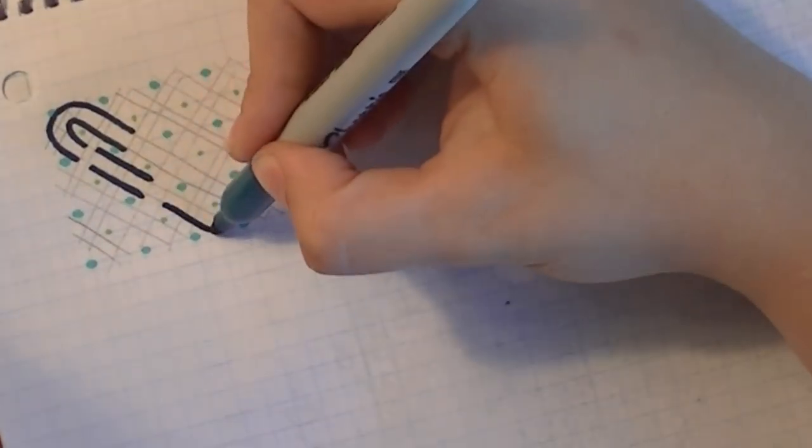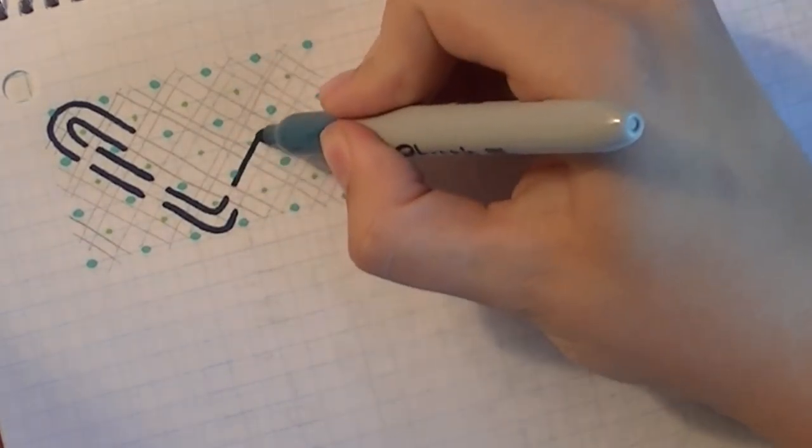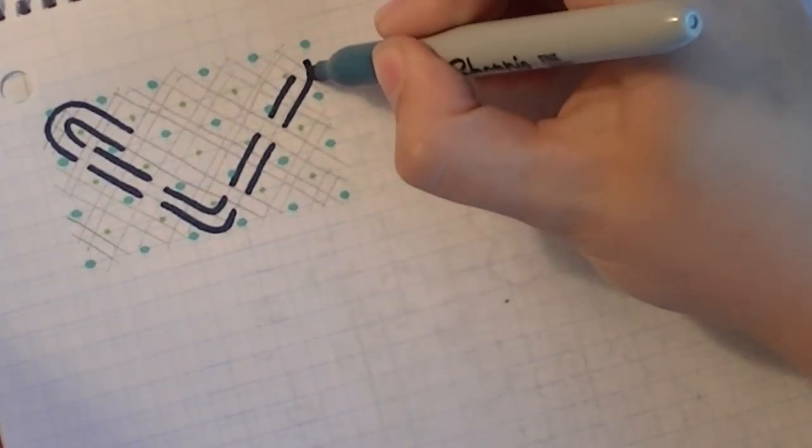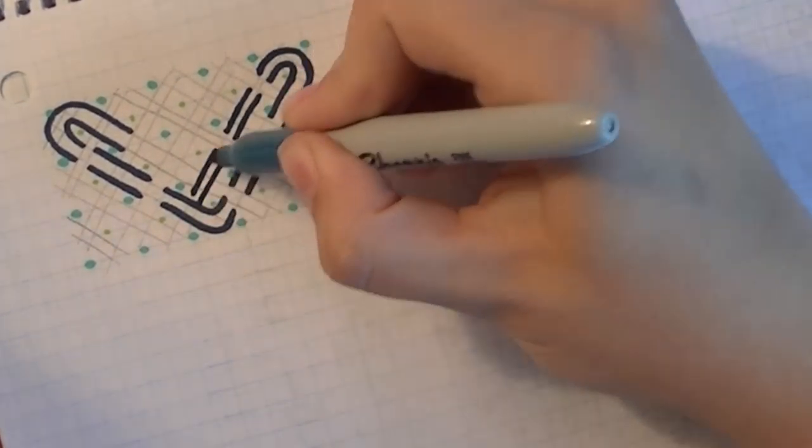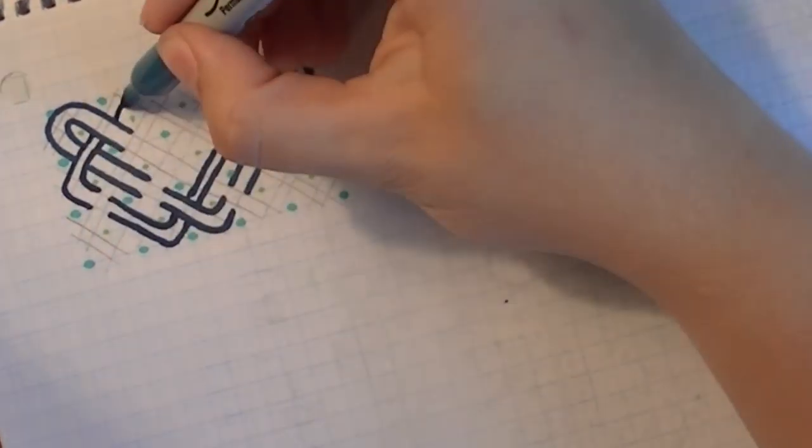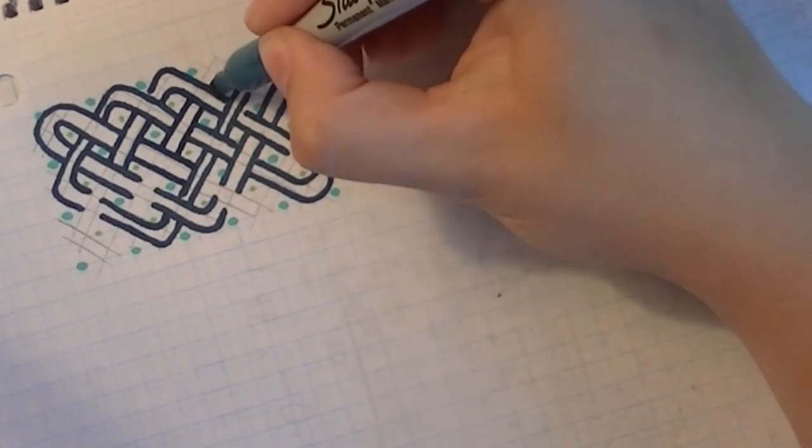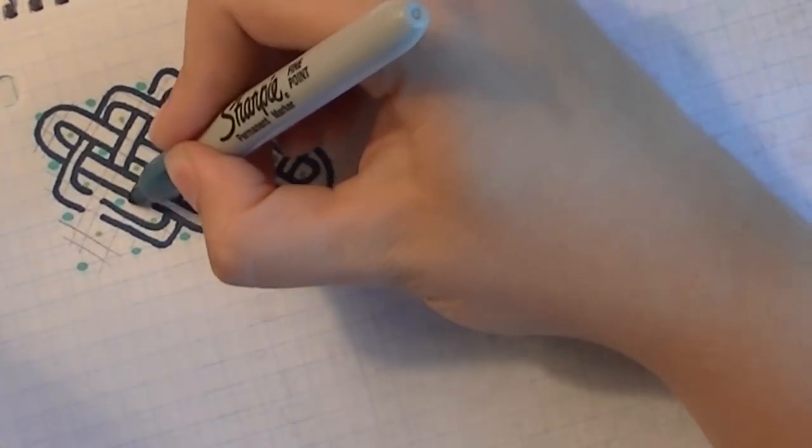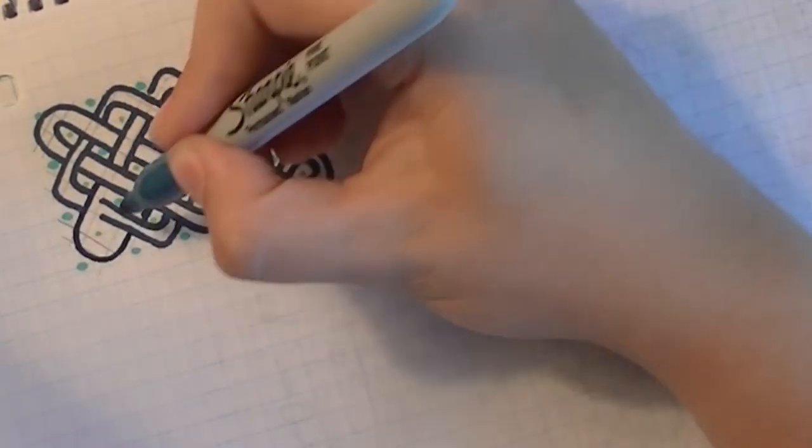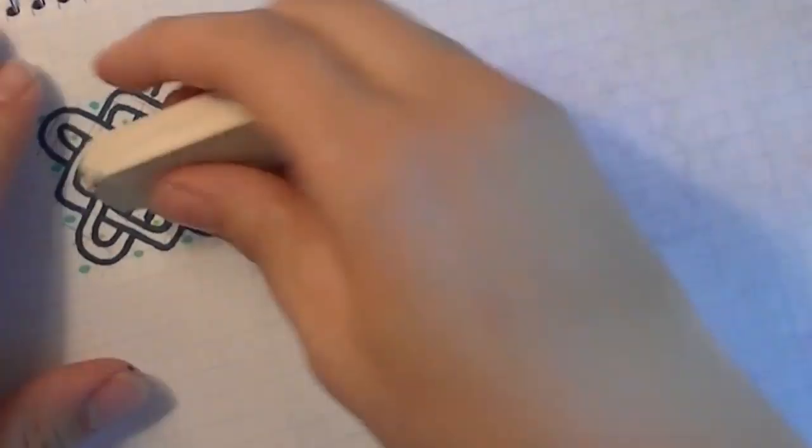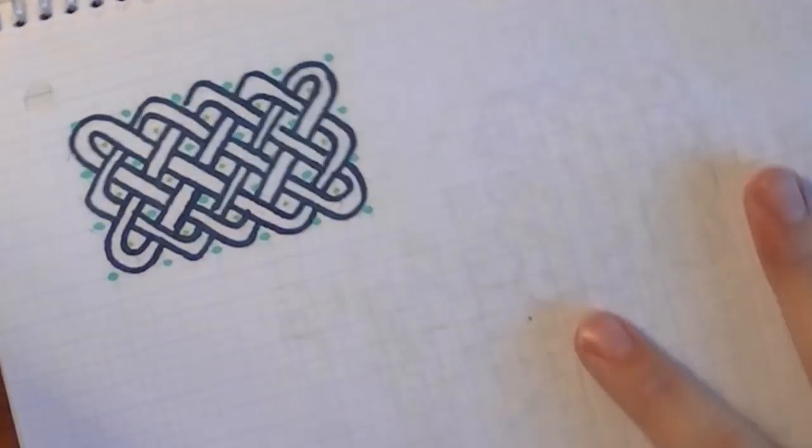And next, I'll outline these bands following an over-under pattern. So hopefully you can follow this. I go over one band, under another, over one band, under another. And I always be sure to bounce off the edges of the grid, treating the edges of the primary grid as if it's a bounding box. Now the over-under part is by far the hardest, along with making the bands of equal width.